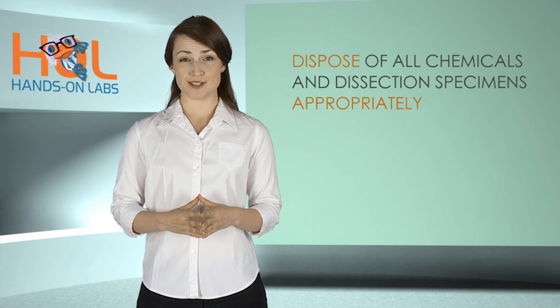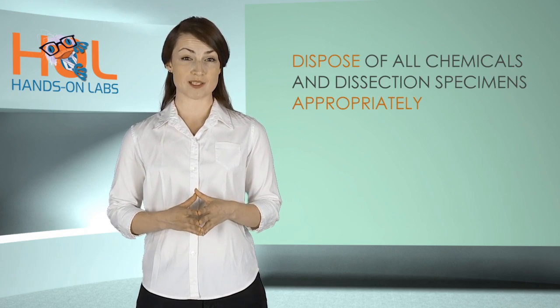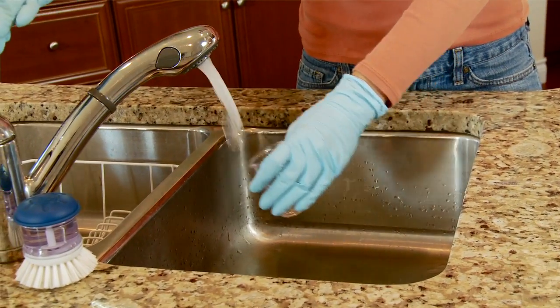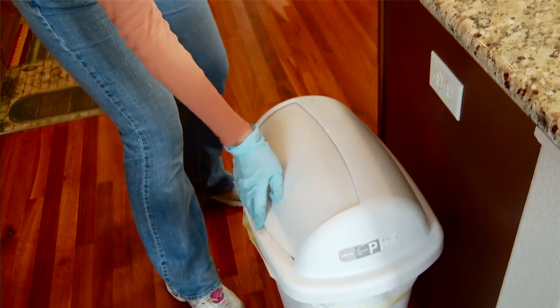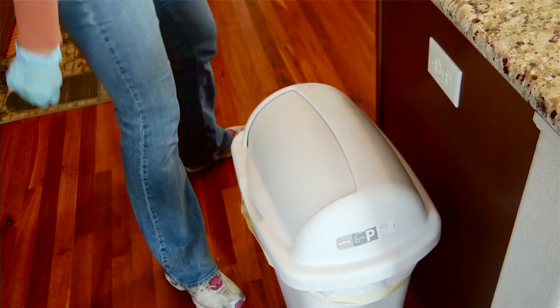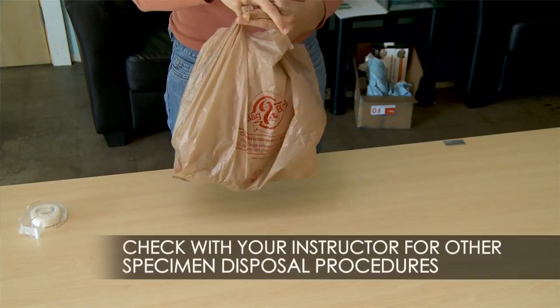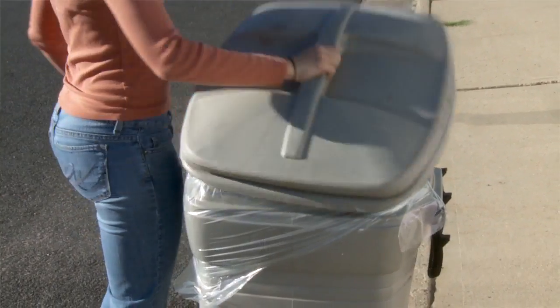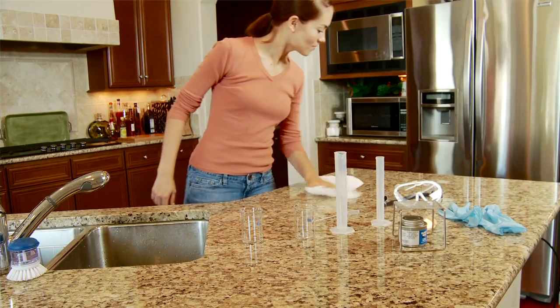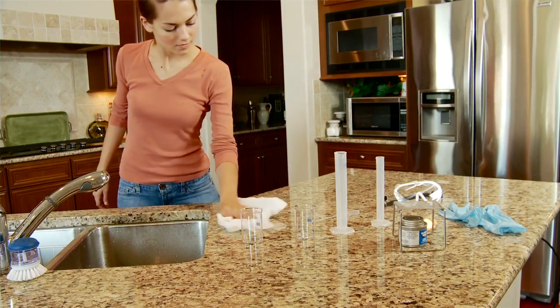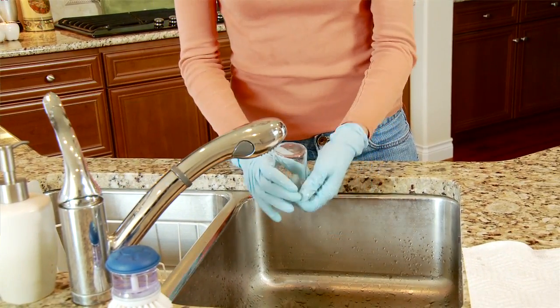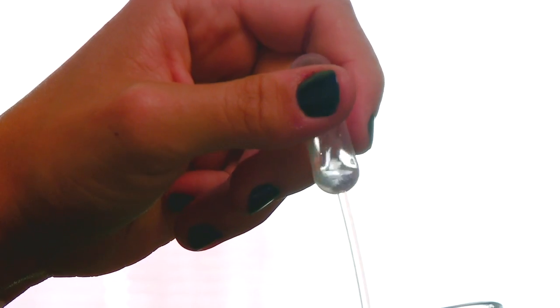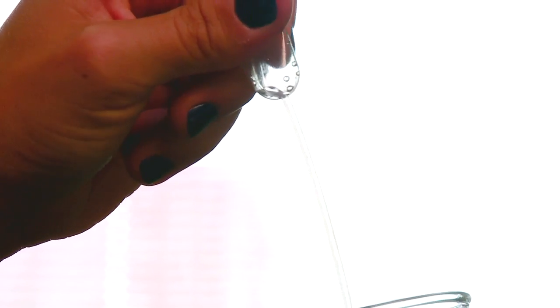During cleanup, dispose of all chemicals and dissection specimens appropriately. Used and unwanted microscale chemicals can be flushed down the toilet or sink and non-chemical items can be disposed of in the trash. Wrap dissection specimens in newspaper and seal in plastic prior to placing in the trash. Wash your work surface and all laboratory equipment with dish detergent and warm water. Rinse equipment with distilled water and air dry glass objects.